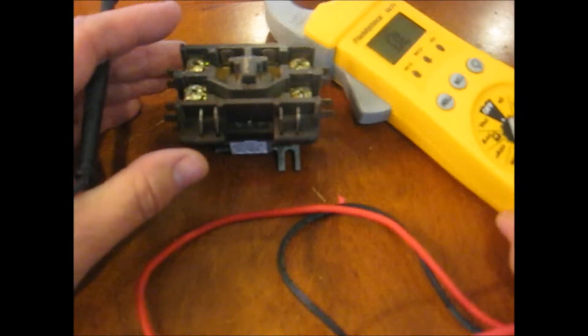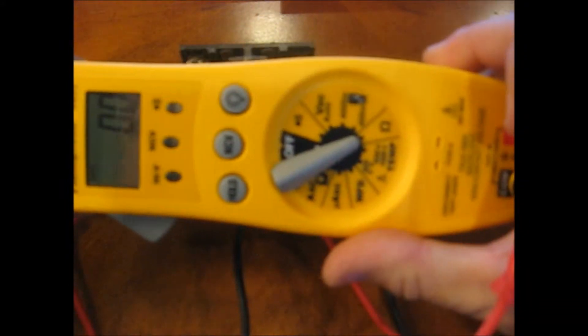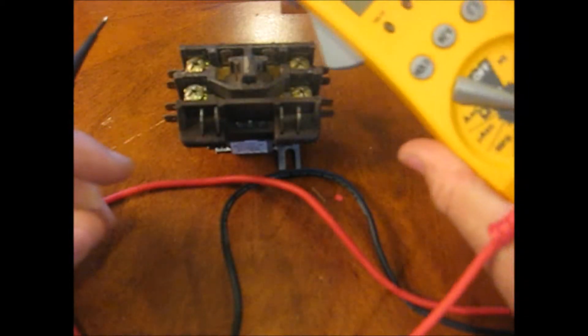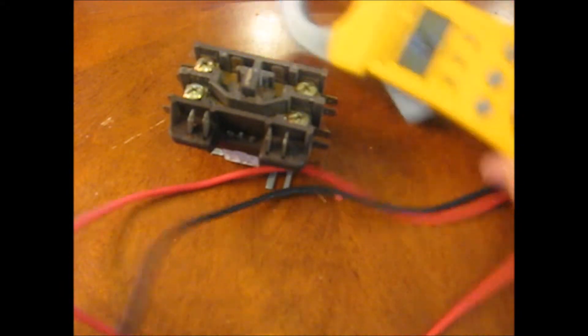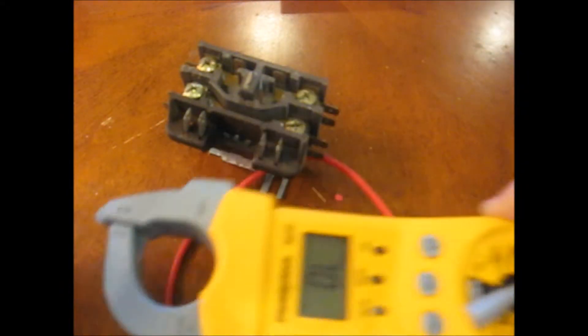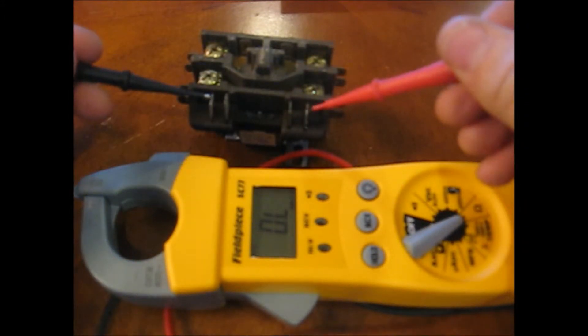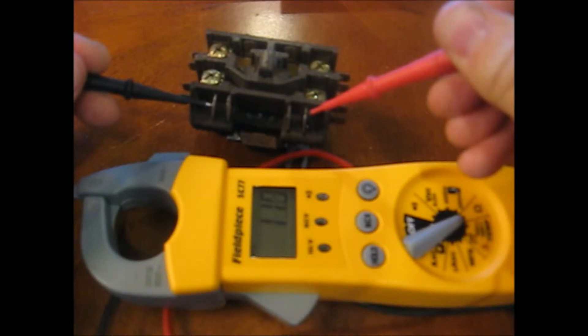However, what we're now going to do is we're going to switch this over to ohms and we're going to check the ohm level across. I'm going to stick this up so you can see this here. We're going to check the ohm level across the terminals and you see we've got 10 ohms.